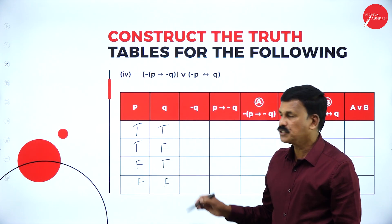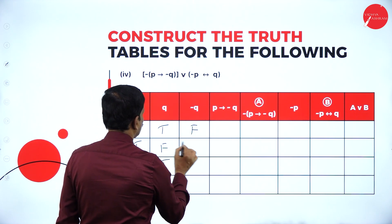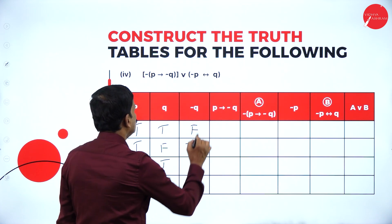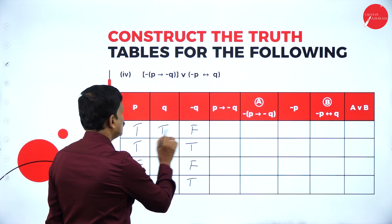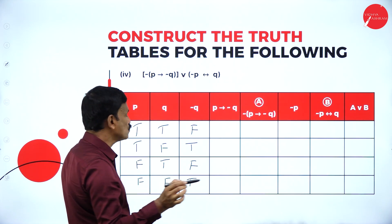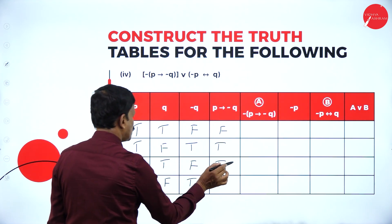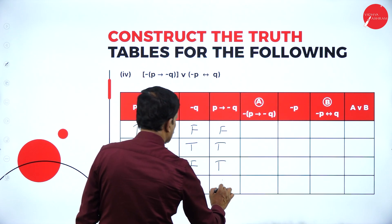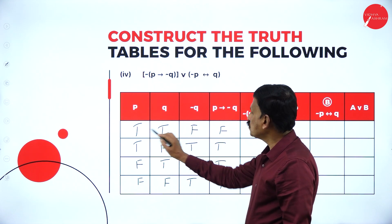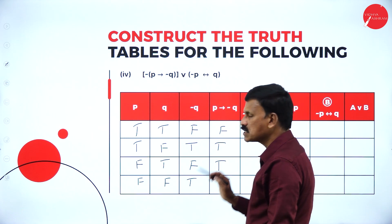Write down the truth values for P and Q. Negation of Q: for T it is F, for F it is T, for T it is F, for F it is T. P conditional to negation Q — in case of conditional, true and false is false; in other cases it is true. So: true and false is false, true and true is true, false and false is true, false and true is true.